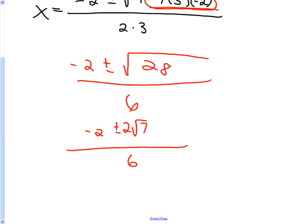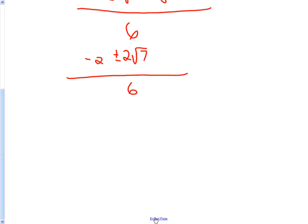No, because there's something in common on all of them, and I'm going to show all the work on it so that you understand. This is really negative two plus or minus two root seven all over two times three.